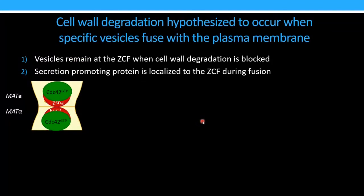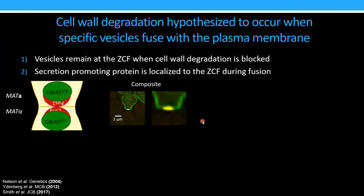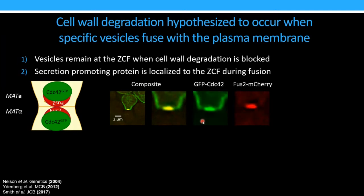And so previous research that I did in graduate school also showed that this protein, CDC42, is localized right where those vesicles are. And so here, we have a GFP-tagged version of CDC42, so it's going to glow green. And then we have FUS2 tagged with M-cherry, so it's going to be red. And when we did these imaging experiments, where only one of the mating partners has these fluorescently tagged proteins, what we saw was, even though CDC42 is kind of all along the cell because it has all of these other functions, but specifically in zygotes, it localizes to this focus right where those vesicles are, right where FUS2 is. And so we really think that it's sort of the business end of cell wall degradation.